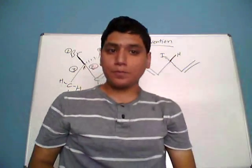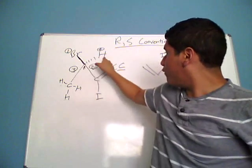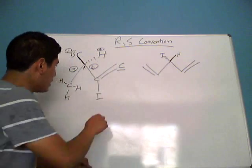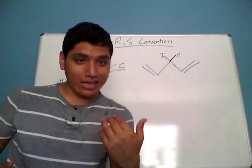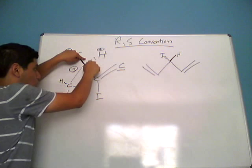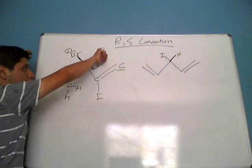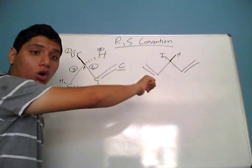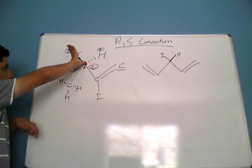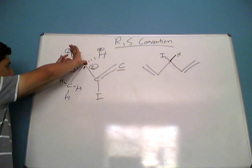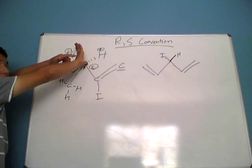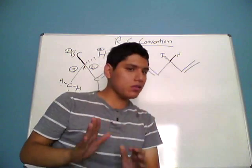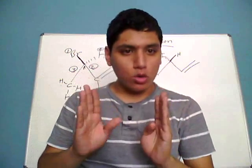So we've assigned priorities 1, 2, 3, 4. How does the right hand rule work? You point your thumb in the direction of the lowest priority substituent. In this case, hydrogen is the lowest priority. Because hydrogen is bonded with a dashed line, it's pointing into the board. So point your thumb into the board, away from you as a viewer. Then curl your fingers starting in the direction of bromine, the highest priority substituent, and curl them naturally with your right hand.